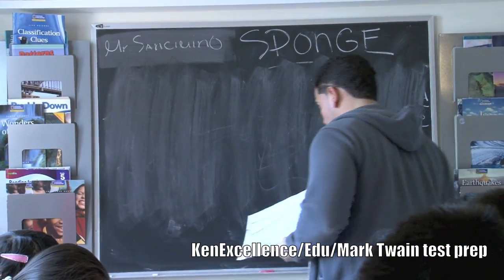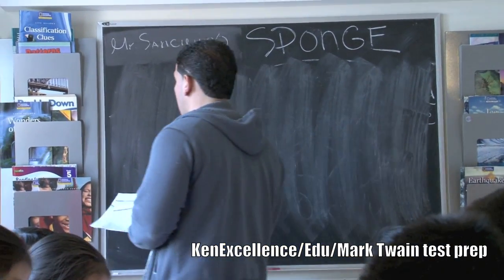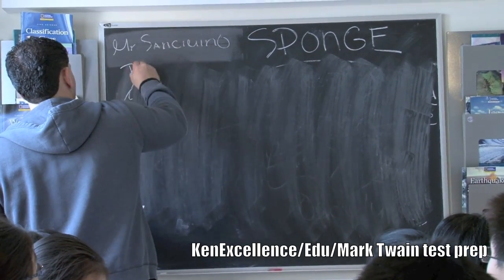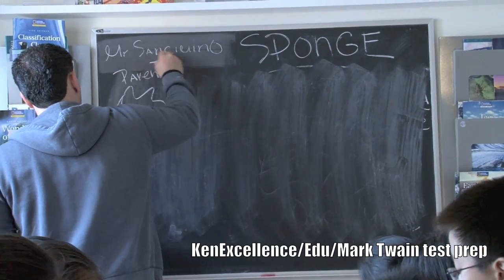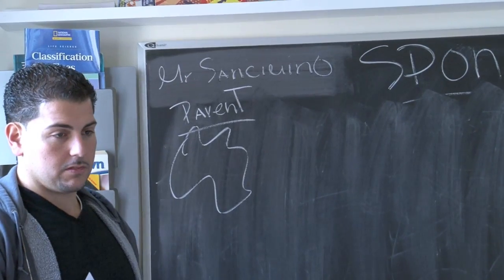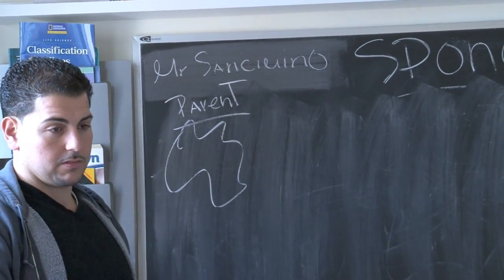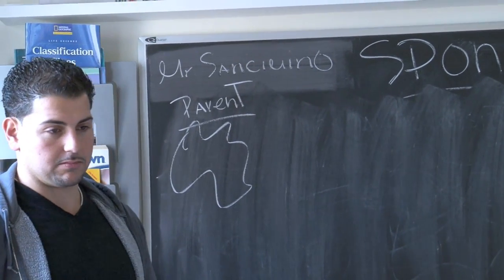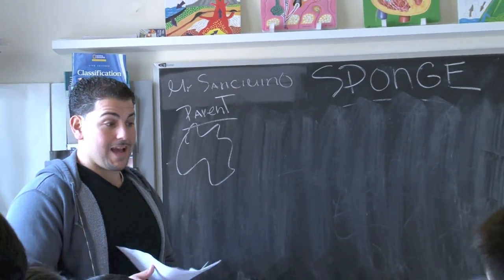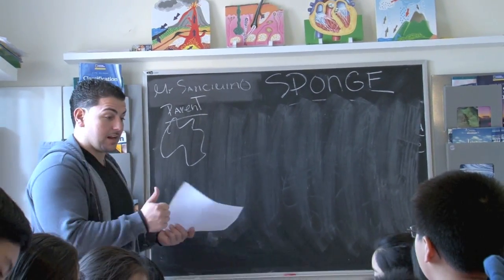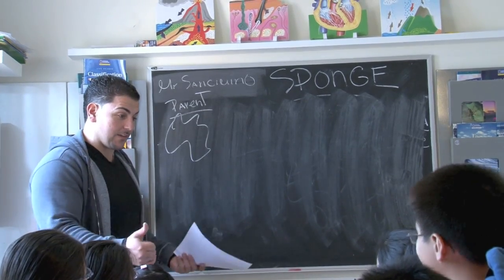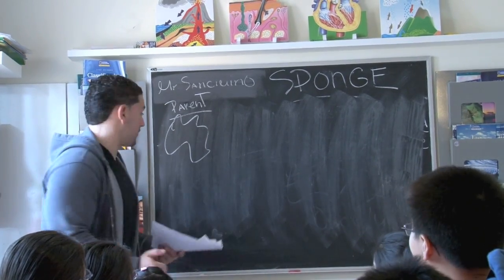It divides, right? But it divides into what? So a sponge — let's say this is the parent. Now, in order for this to reproduce, how does this reproduce? Sexually or asexually? Asexually — exactly. That means it doesn't need a man and a woman. Just one person. It could produce all by itself. What a great life.